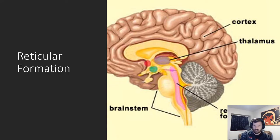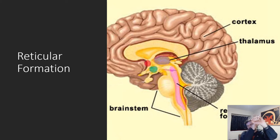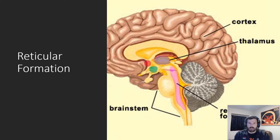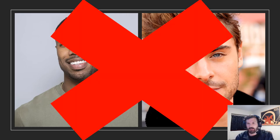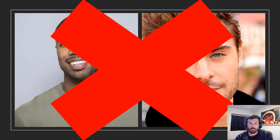Next we have the reticular formation. It sits in the back part of the brainstem — think of it like a pancake or tortilla laid on the back side. Its job is to help control our arousal. By arousal I mean how awake or alert we are in a specific situation — not the warm fuzzies we feel for Michael B. Jordan and Zac Efron, but how awake and alert we are.